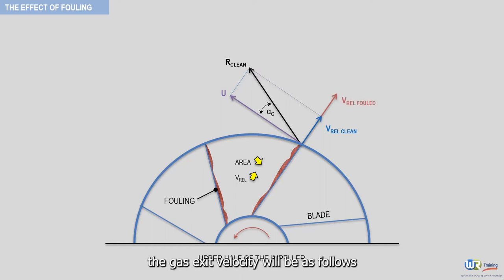In this case, the gas exit velocity will be as follows. This gas exit velocity has the following flow angle, which we'll call alpha f. The letter f refers to the fouled conditions.